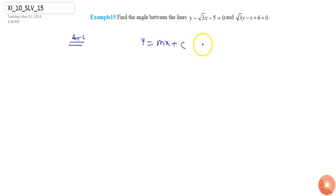form, then by comparing with the standard equation I can calculate the value of m. So if I write the first line L1, y minus root 3 x minus 5 equals 0, or I can say y equals root 3 x plus 5. Comparing with the standard equation y equals mx plus c, I will get m1 equals root 3.